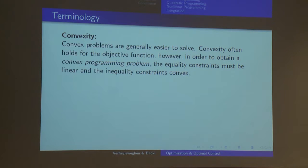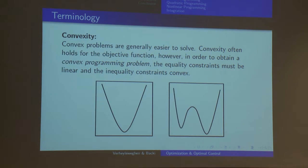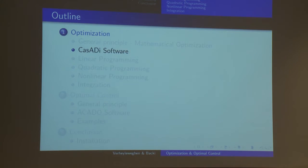Convexity: convex problems are generally easier to solve. Convexity often holds for the objective function itself. To obtain a convex programming problem, the equality constraints must be linear and the inequality constraints must be convex. Going back to our example, this function is convex while this other function is not convex.